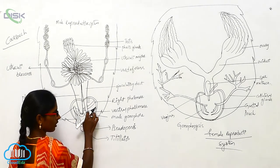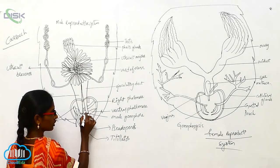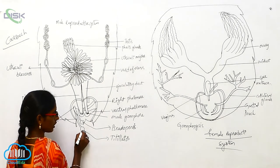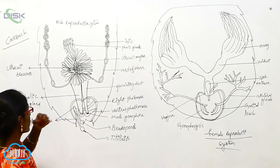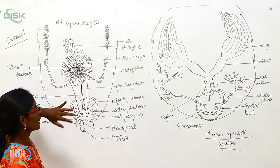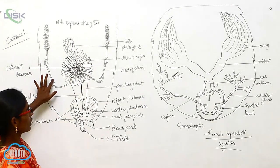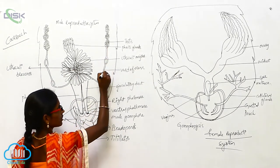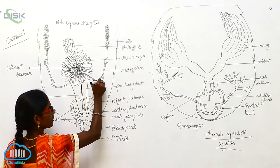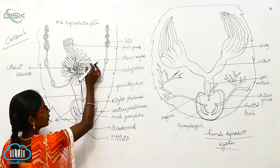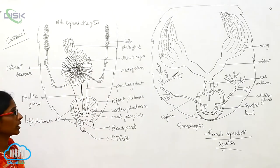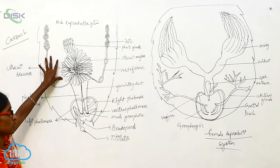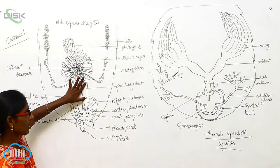The male reproductive system also has the right phallomere, left phallomere, and ventral phallomere. This is the male gonophor, pseudoponies, and titillator. The testes release sperms to the vas deferens, and from the vas deferens it will reach the utriculi mesores.